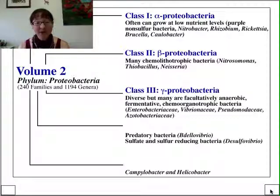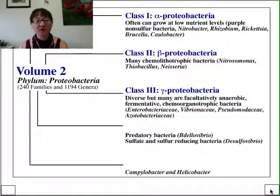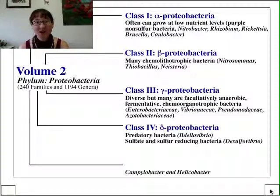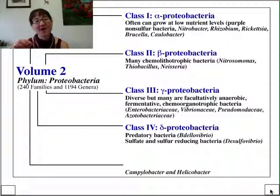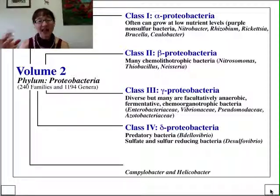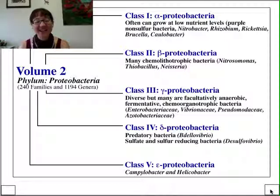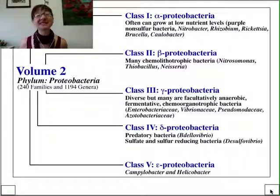The Betaproteobacteria include things like Thiobacillus ferrooxidans — the iron and sulfur oxidizer contributing to acid mine drainage, as discussed with regard to Leadville. The Gammaproteobacteria are all of our gram-negative unknowns: Shigella, Salmonella, Enterobacter, Klebsiella, Pseudomonas. The Deltaproteobacteria include Bdellovibrio, a predaceous bacterium with a fast flagellum that bores into gram-negative prey, and Desulfovibrio, visible as the black precipitate at the bottom of Winogradsky columns. The Epsilonproteobacteria include Helicobacter pylori, causative agent of peptic ulcers, and Campylobacter jejuni.